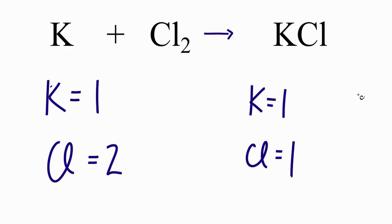So the potassiums, the Ks, they're balanced with one on each side. It's the chlorines, we have two here and one here. If we put a two in front of the KCl, we'll have two times the K, so that'll go to two. But we'll have two times the Cl, and that'll mean we have two chlorine atoms, and the chlorines will be balanced.